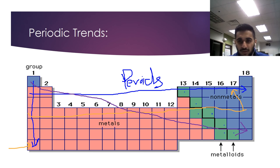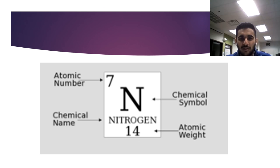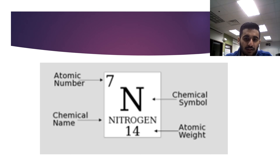On the periodic table, each element shows its atomic number and atomic weight. For nitrogen: atomic number 7 — that's the number of electrons — and atomic weight 14, which includes protons plus neutrons. The chemical name is nitrogen and the symbol is N.